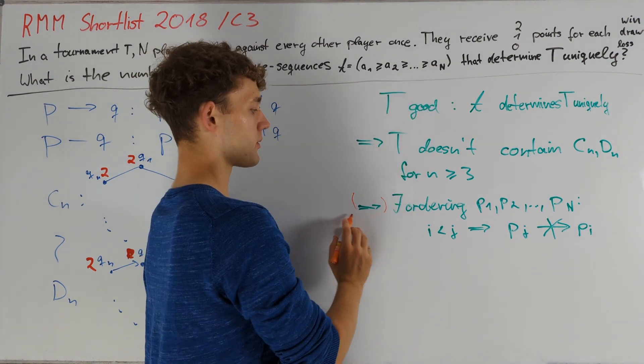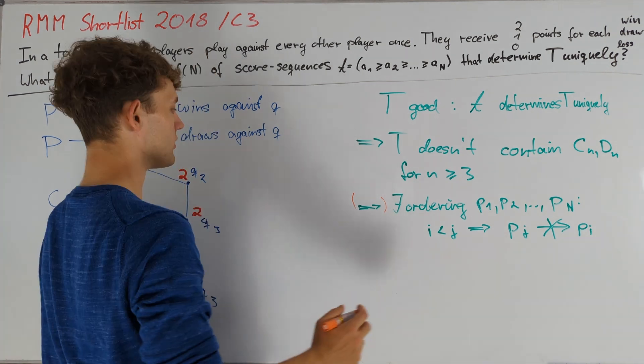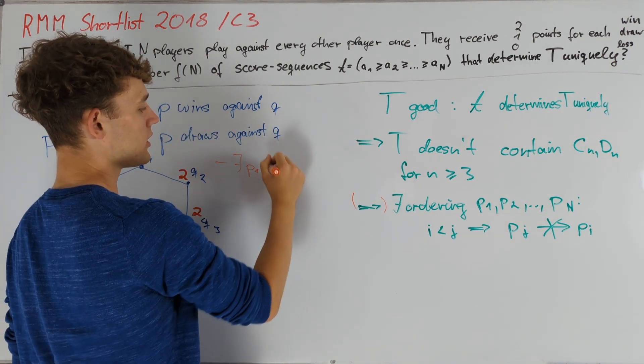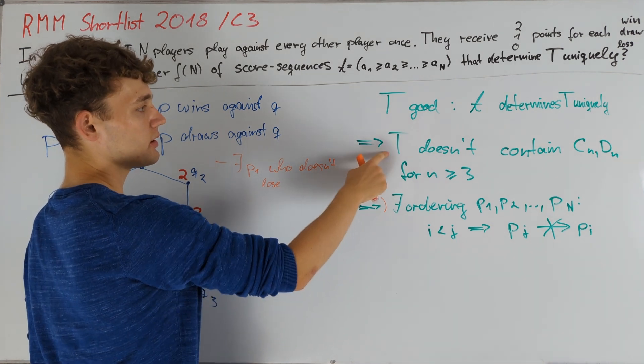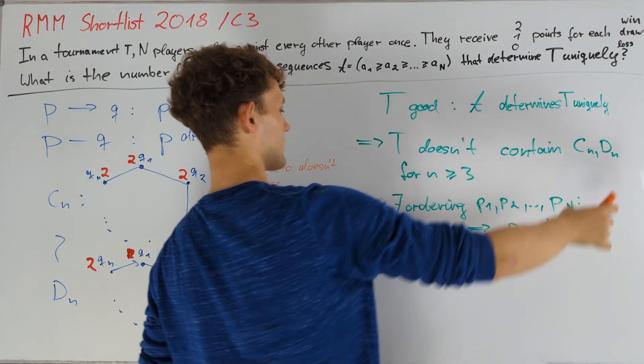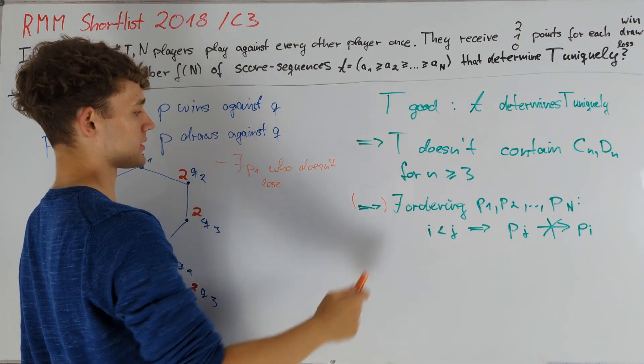Now we haven't proven this implication so far, so let's go ahead and do this. Notice that it will be enough to prove that we can find a player P1 who doesn't lose, because then we can just delete P1 from T and get a new tournament that also doesn't contain any directed cycle. Then we can reapply this to get P2 and so on.